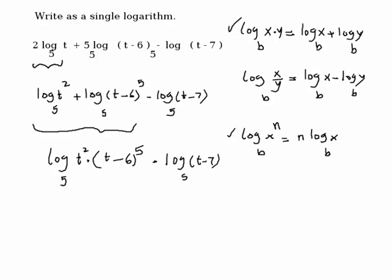Now, since this is minus, I can use the second property here. I can combine this as log of your x would be all this stuff here. Your y would be all this stuff here.